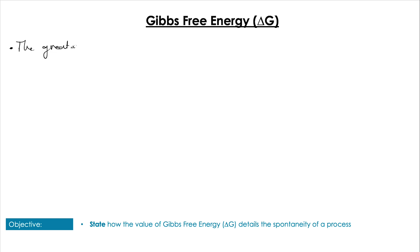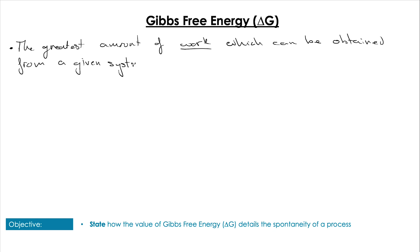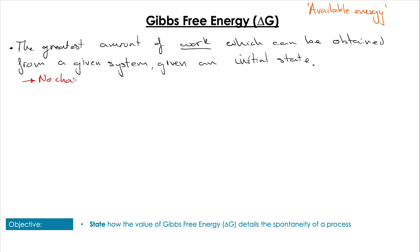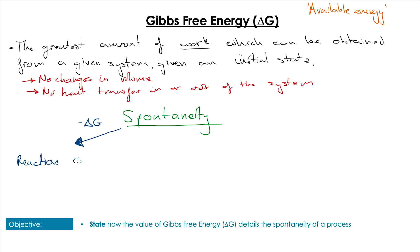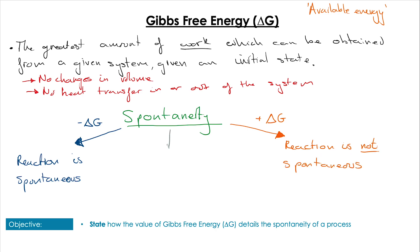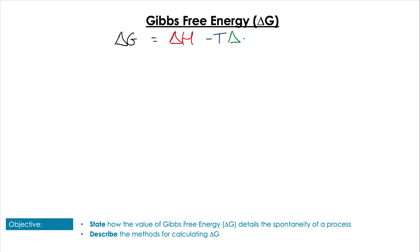On to Gibbs free energy. Gibbs free energy is basically the greatest amount of work which can be obtained from a system given its conditions — you can think of this as the available energy of a system. It assumes no changes in volume and no heat transfer in or out. What it really does is tell us about the spontaneity of a reaction: if ΔG is negative, the reaction is spontaneous; if positive, it's non-spontaneous; if equal to zero, the reaction is at equilibrium, which we'll cover more in unit 7.